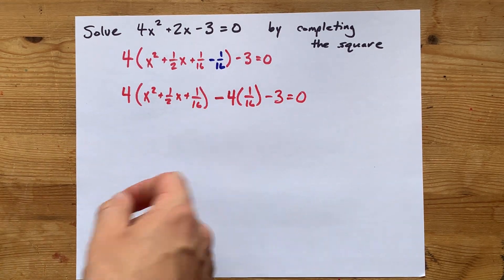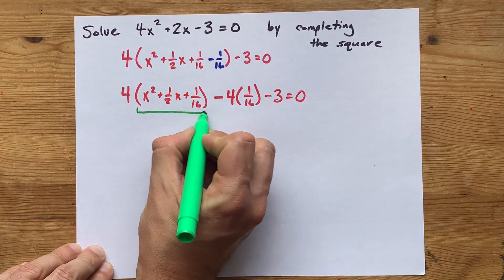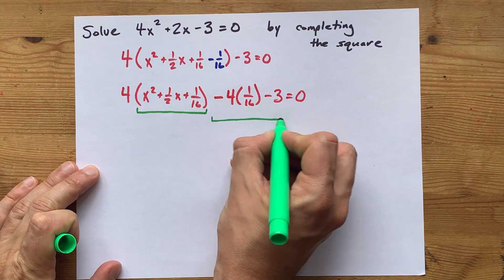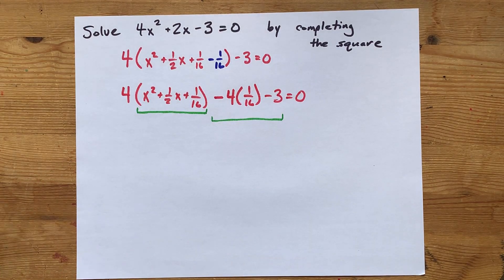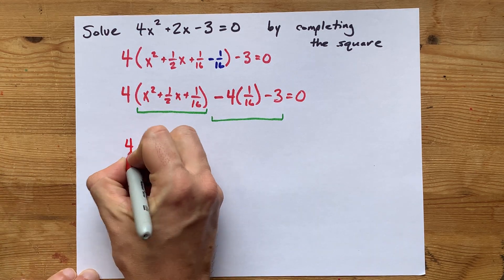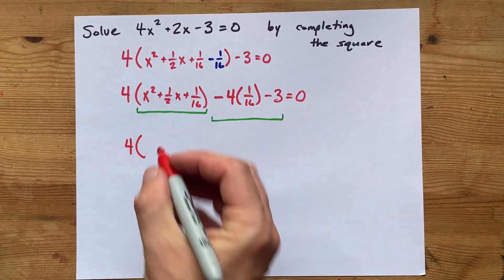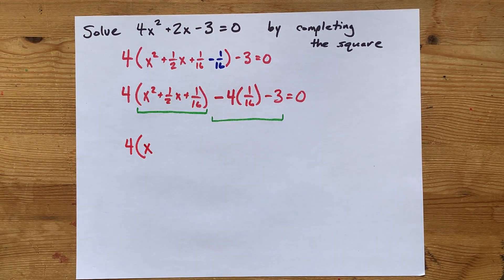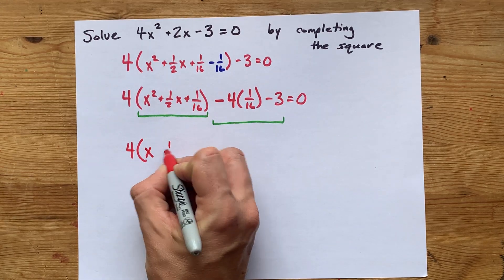Now, the key bit is that this here is a perfect square trinomial. And, separately, this is just a bunch of math you can do on your calculator. So, this bit here is four times. Now, I don't know if you know how to factor a perfect square trinomial or not. You should. It's the square root of this term. And the square root of x squared is x. The square root of the last term, the square root of this, is 1 quarter.